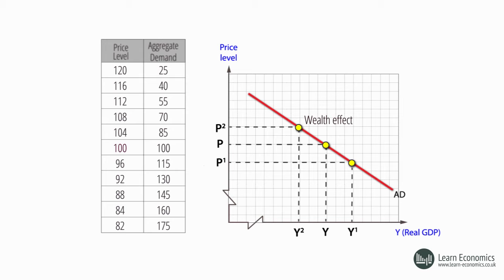Secondly, a lower price level means households and firms need to keep less of their assets in a liquid form, and can deposit excess assets with banks as savings, or purchase stocks and shares, or, in the case of firms, buy bonds. This extra liquidity into the financial system puts downward pressure on interest rates, which can stimulate investment and consumer spending. This is called the interest rate effect.